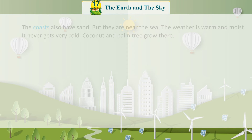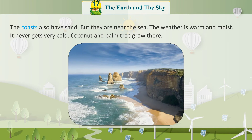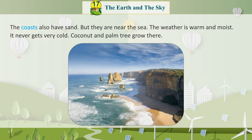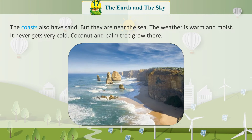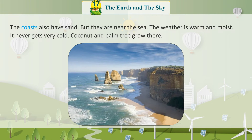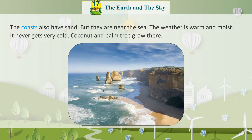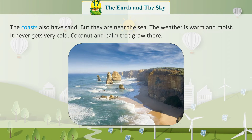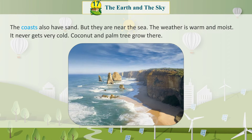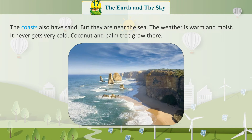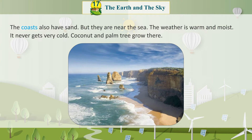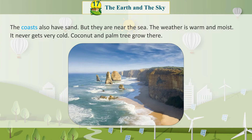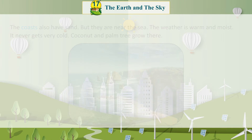Coasts: The coasts also have sand, but they are near the sea. The weather is warm and moist. It never gets very cold. Coconut and palm trees grow there.